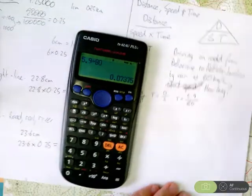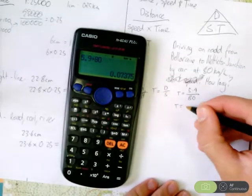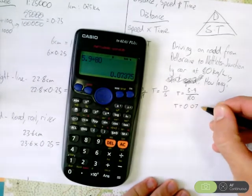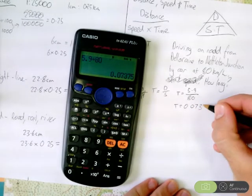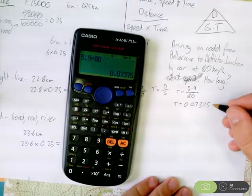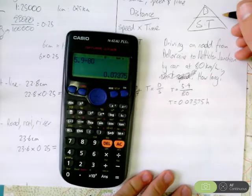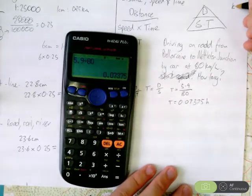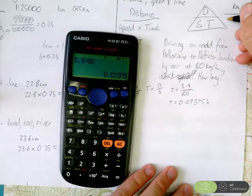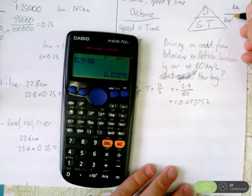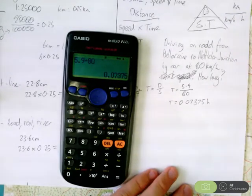So that gives us a time of 0.0775 in hours. Because we had distance in kilometers, speed in kilometers per hour, and time would then be in hours.